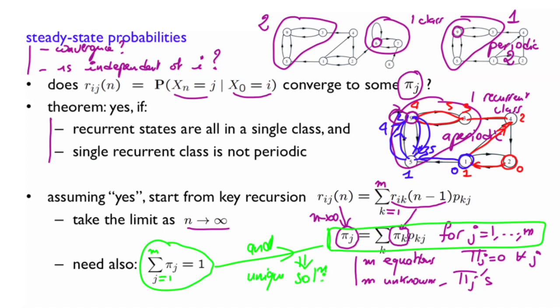And this unique solution cannot be this one. And so in conclusion, we can find the steady state probabilities of the Markov chain by just solving these linear equations, which should be numerically a straightforward procedure. Thank you.